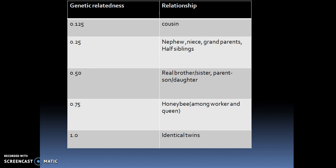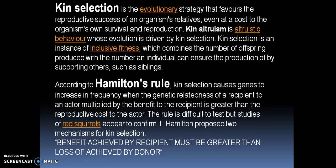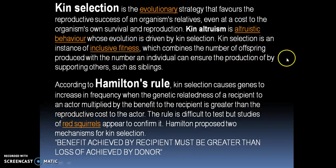Kin selection is the evolutionary strategy that favors the reproductive success of an organism's relatives, even at a cost to the organism's own survival and reproduction. Kin altruism is altruistic behaviour whose evolution is driven by kin selection. In kin selection, genetically related species — the donor sacrifices its fitness value and the recipient benefits. Kin selection is an instance of inclusive fitness, which combines the number of offspring produced with the number an individual can ensure by supporting others such as siblings. Altruistic behaviour increases the overall fitness of the population — that is inclusive fitness.